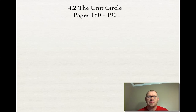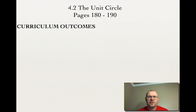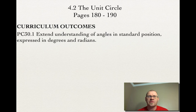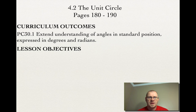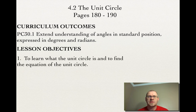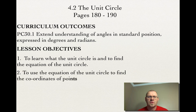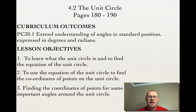Today's topic is 4.2, the unit circle, and that's on pages 180 to 190 in your textbook. Our curriculum outcomes: we're trying to extend our understanding of angles in standard position expressed in degrees and radians. Our lesson objectives: number one, learn what the unit circle is and find its equation. Number two, use the equation to find the coordinates of any points on that circle. And number three, find the coordinates of points for some important angles around the unit circle.